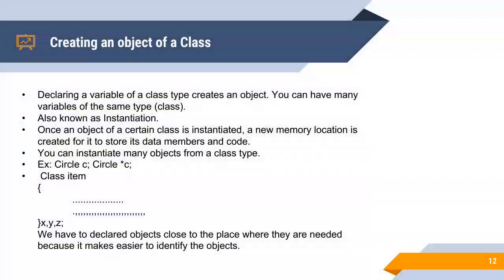How to create an object of a class? Declaring a variable of a class type creates an object. You can have many variables of the same class also known as instantiation.